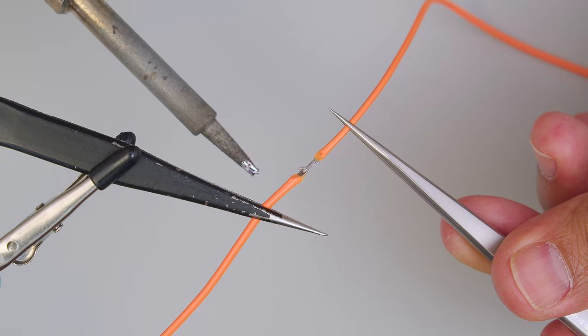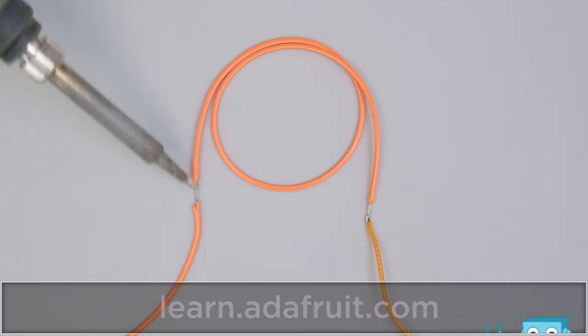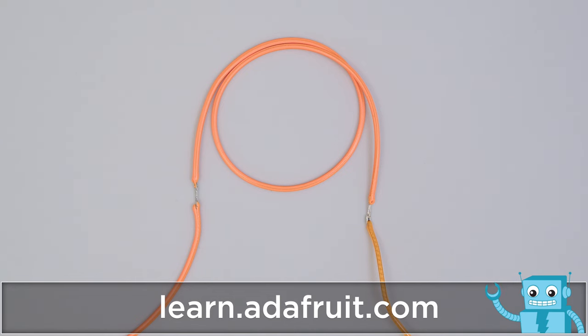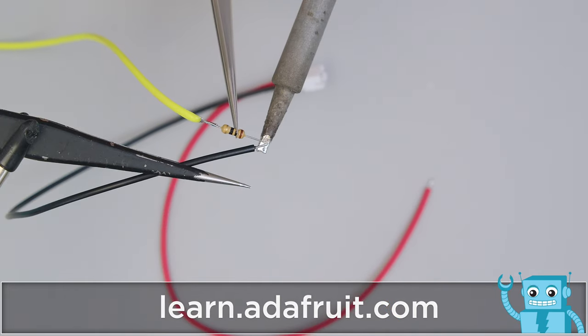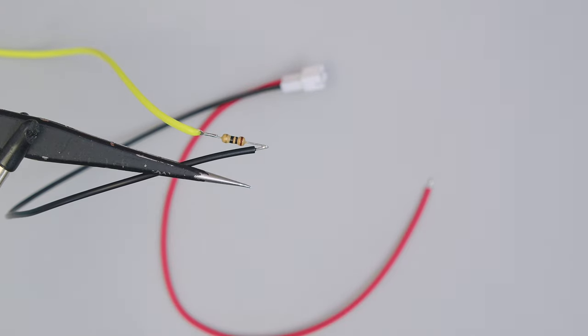Start by soldering together the LED Noodles in series with the cathode connecting to the anode. Be sure to check out the guide on the Adafruit Learning System for a full step-by-step tutorial. This current limiting resistor is soldered to the ground wire of a JST connector for a plug-and-play assembly.